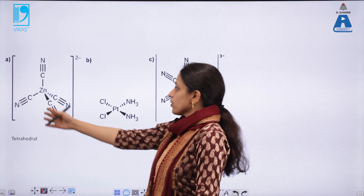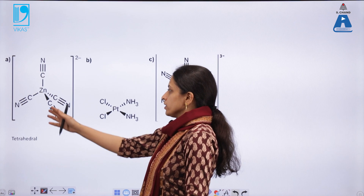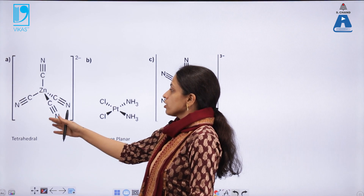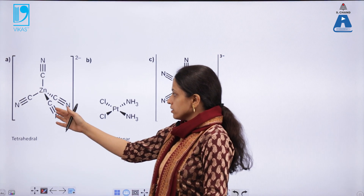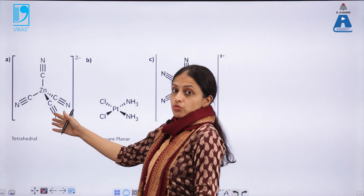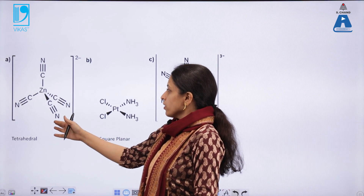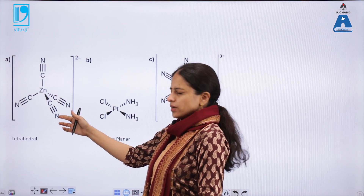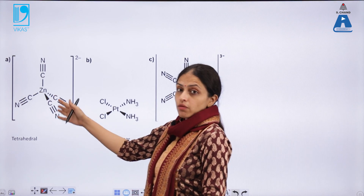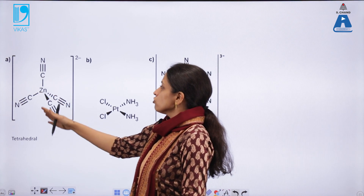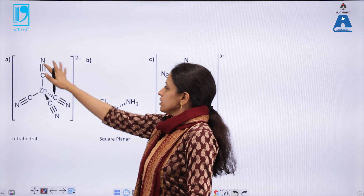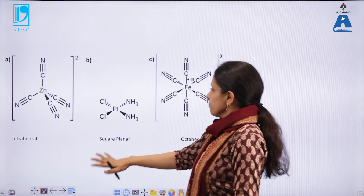Here you can see a transition metal complex of zinc with cyanide, which is a monodentate ligand. It can act as a unidentate ligand or as an ambidentate ligand where it can bind through C or N. Here it is coordinating through C, giving a tetrahedral geometry.